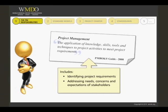Normal project constraints include scope, quality, schedule, budget, resources and risk. Balancing these constraints becomes particularly interesting when the list is expanded to include patient risk or safety and regulatory requirements.